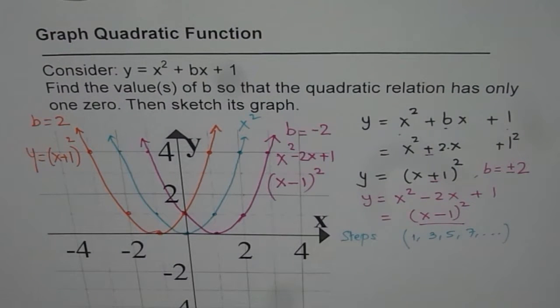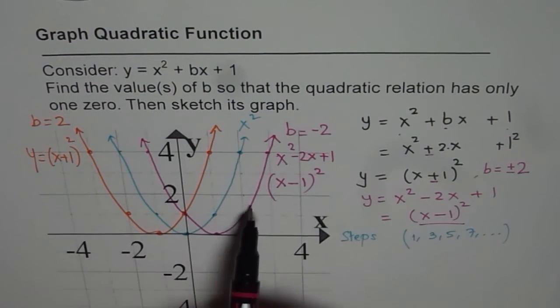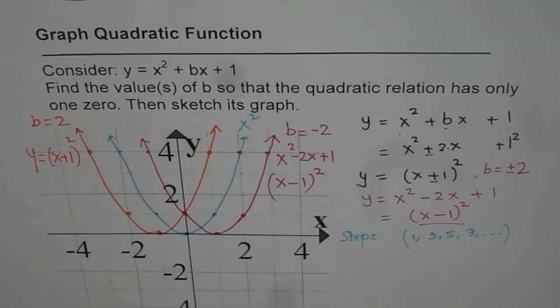So b can have two values. The two values for b are plus and minus two. And these two graphs represent them respectively. I hope you appreciate it. Thank you and all the best.